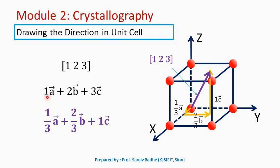Without changing the direction of the vector, we will reduce the components. That can be done by dividing all the components by the same number — here we select 3, the maximum value. So we get 1/3 a-bar plus 2/3 b-bar plus 1 c-bar. This vector will indicate the same direction but its length is reduced so that it will fit into the unit cell.